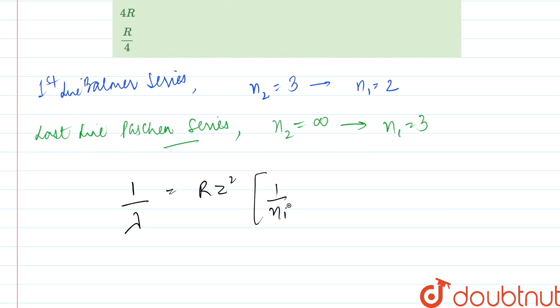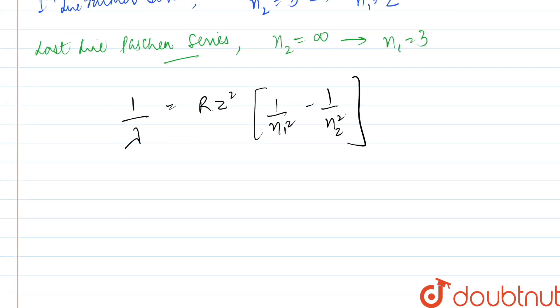Now, to find the wave number, the formula is: wave number equals R·Z² times (1/n1² minus 1/n2²). We need to find the difference in wave number between these two transitions.